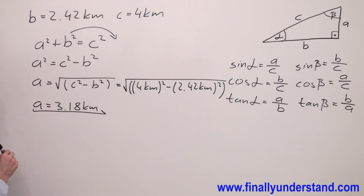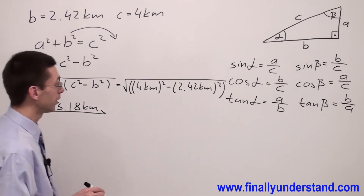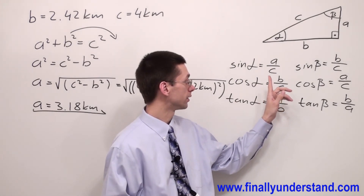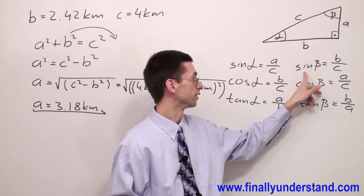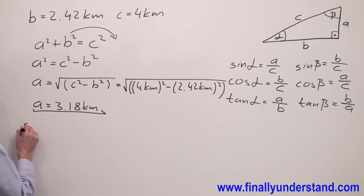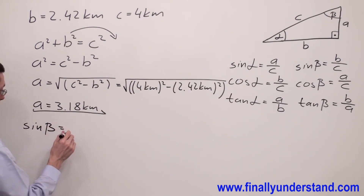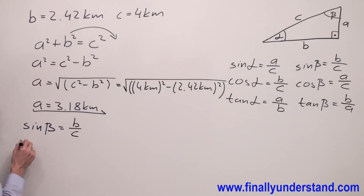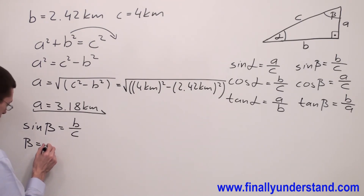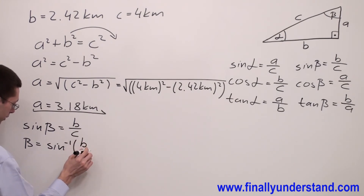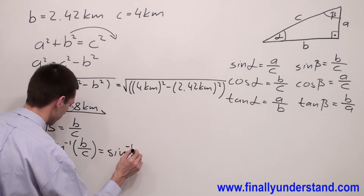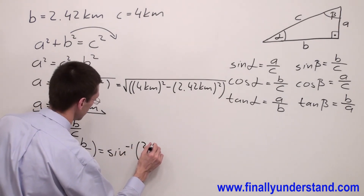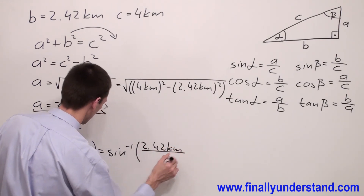We found the length of side a. In order to find the angles, I need to use trigonometric functions. I'm going to find angle beta first. I'm going to use sine: sine beta equals b over c. In order to find angle beta, I take the inverse sine of b over c.